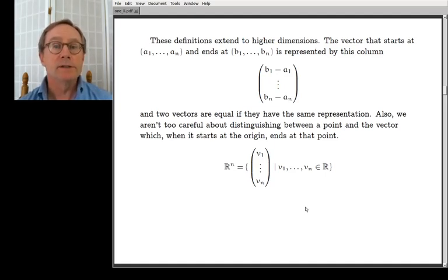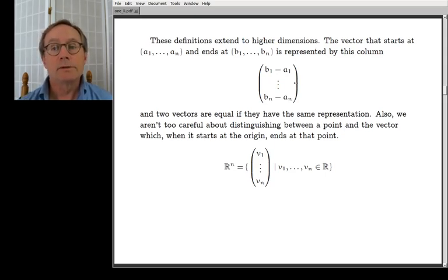And all this stuff, one advantage of all this stuff is that it all instantly extends to higher dimensions. So three-dimensional, four-dimensional, five-dimensional, and sometimes when you work with linear systems, you're working with hundreds of unknowns, hundreds of equations, so you could have hundreds of dimensions in your collection of vectors. And so all this stuff extends immediately to many, many dimensions.